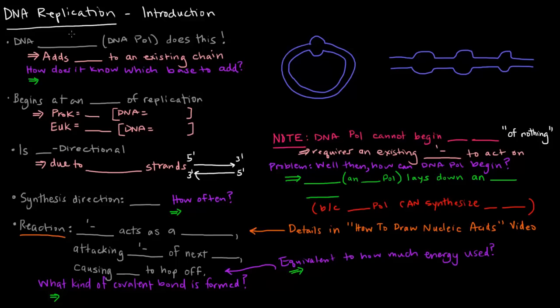So DNA replication is the process by which we make DNA. DNA replication is done by DNA polymerase, or DNA pol as it is abbreviated. It adds DNTPs, deoxynucleotide triphosphates, to an existing chain.